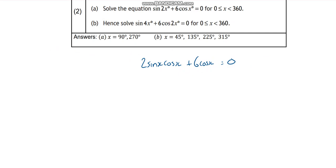So if I rewrite that, I'll take cos x out. Pen gone. Take cos x out. In fact, looking at it, I can take 2 out as well. There we go. So that's going to give me sine x plus 3 equals 0.